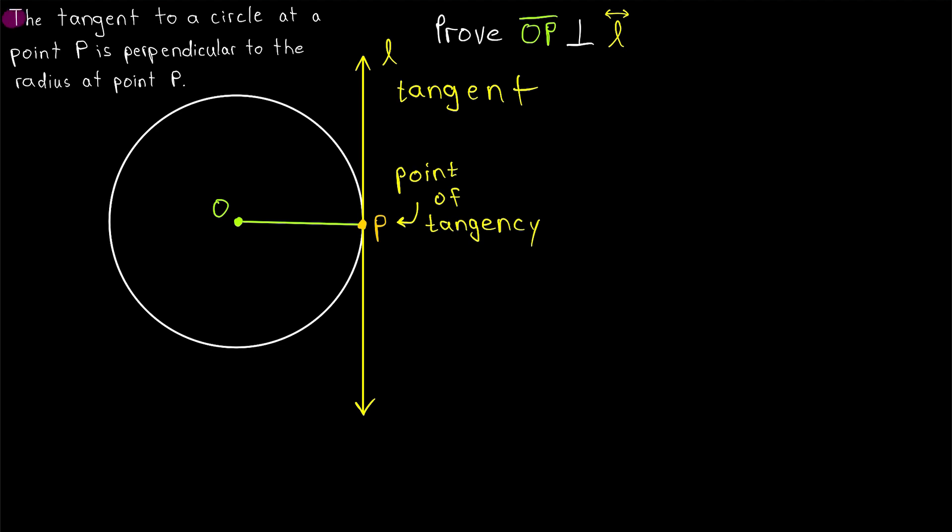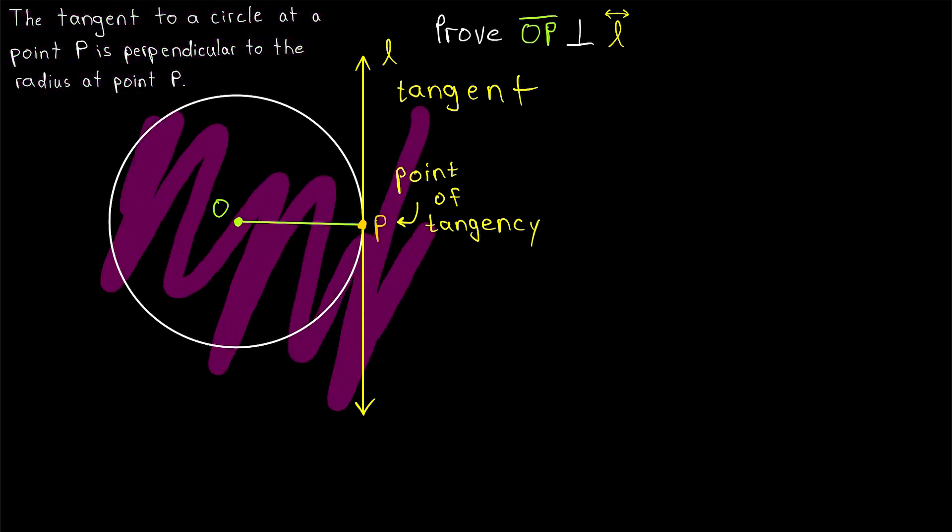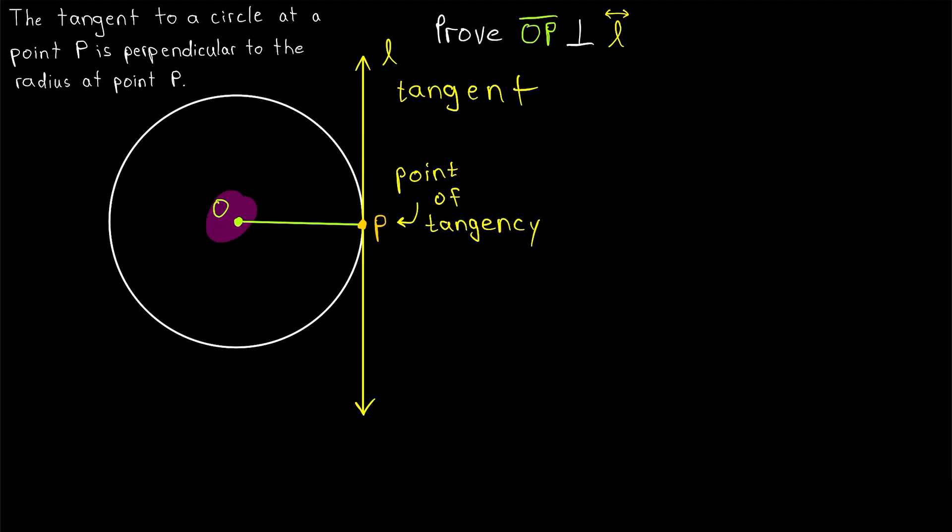What we'll prove today is that the tangent to a circle at a point P is perpendicular to the radius at point P. So, in the context of this diagram, we've got a circle with center O and this tangent line L, where P is the point of tangency.